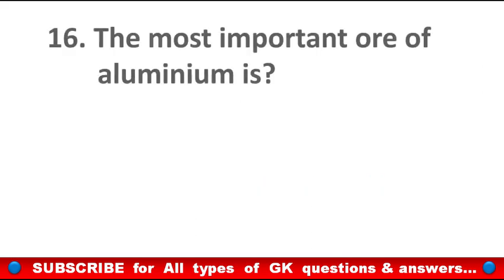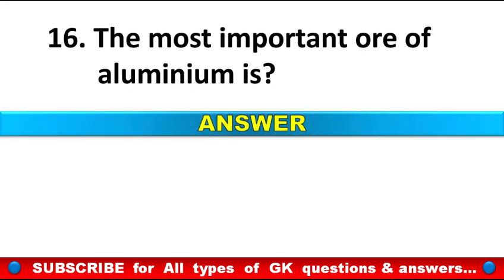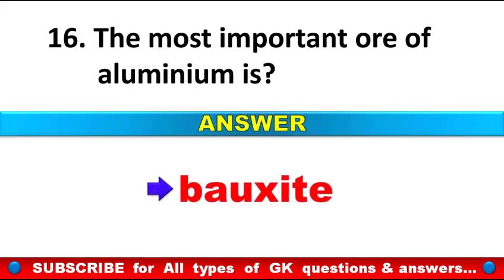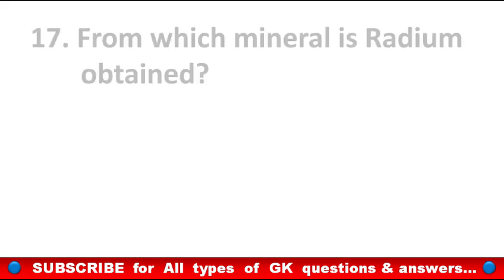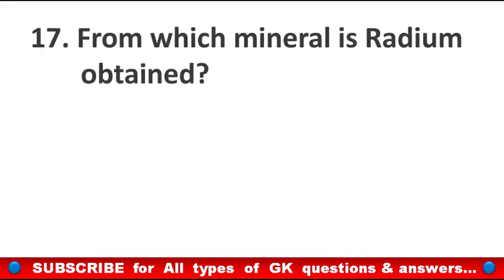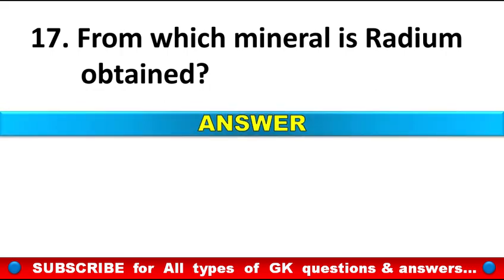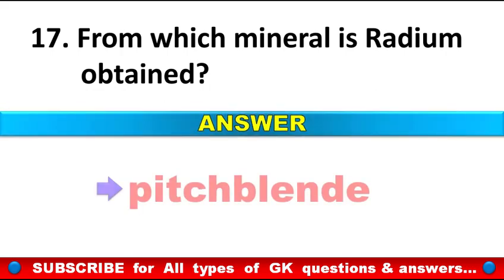The most important ore of aluminum is? Answer: Bauxite. From which mineral is radium obtained? Answer: Pitchblende.